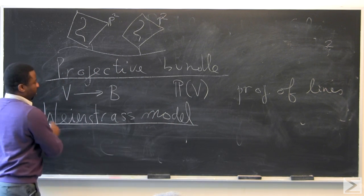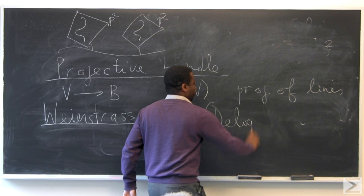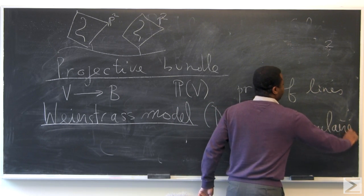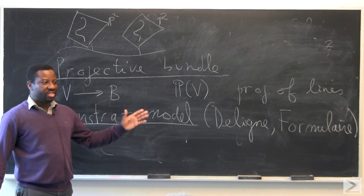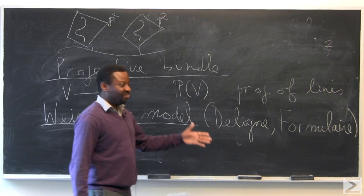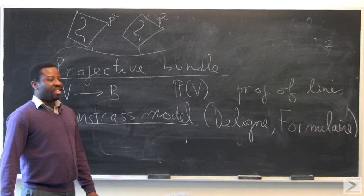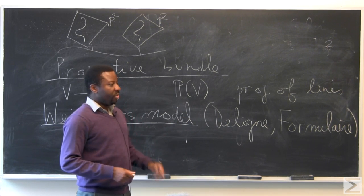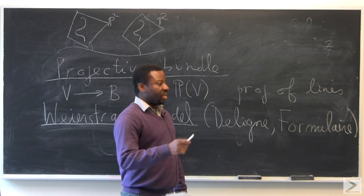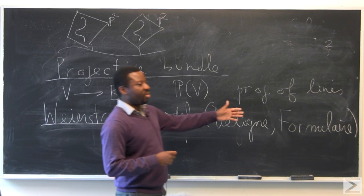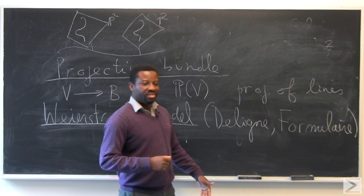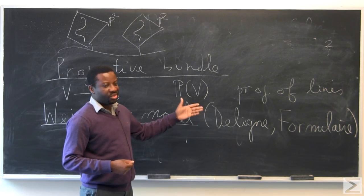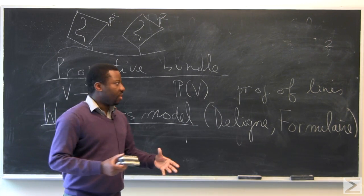How do we formalize the notion of a Weierstrass model? There is a really nice paper written by Deligne called 'Formulaire' — it came from a school in Antwerp, where Tate was talking about elliptic curves. Deligne wrote a paper titled 'Formulaire sur les courbes elliptiques d'après Tate,' meaning essentially a list of formulas. In it, he explains how you can construct a projective bundle and turn any elliptic fibration into a hypersurface in that projective bundle. For the English version, there is a book by Mumford and Suominen.